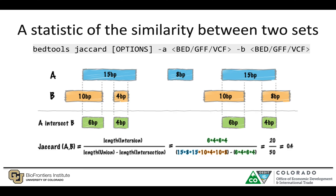The last command I want to highlight is bedtools jaccard. Given intersecting regions, this provides a single statistic summarizing how similar two input files are based on their overlapping regions. Jaccard calculates the intersection divided by the union of the overlapping regions. The result ranges from 0 to 1, with 0 meaning not similar at all and 1 meaning exactly the same. In this toy example, the Jaccard index is 0.4, which is helpful for comparing how similar two experiments or conditions are.